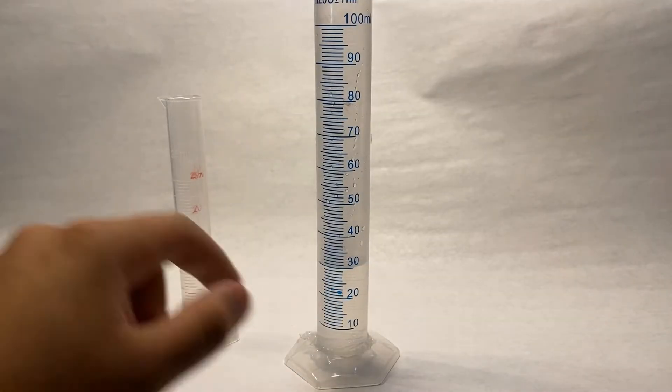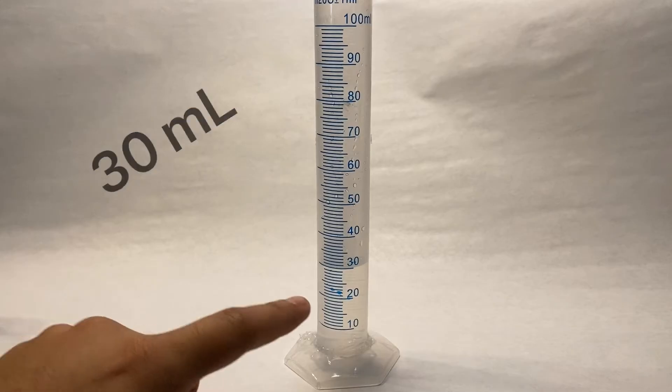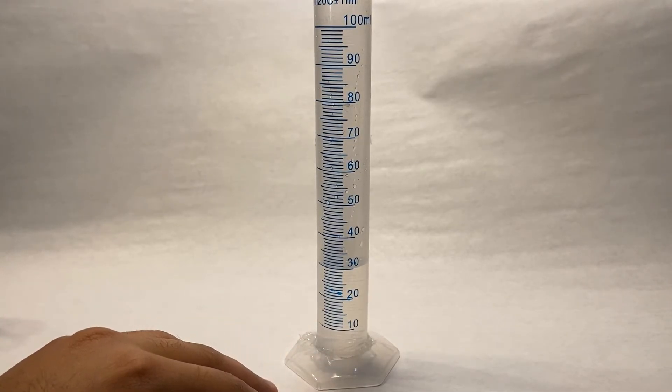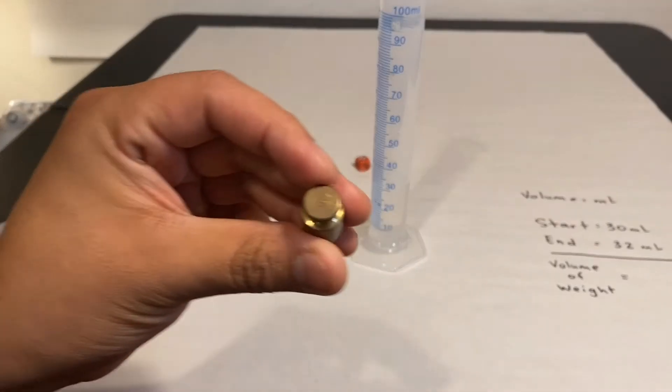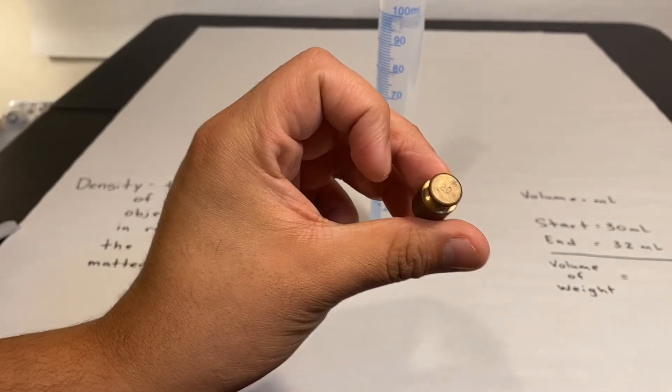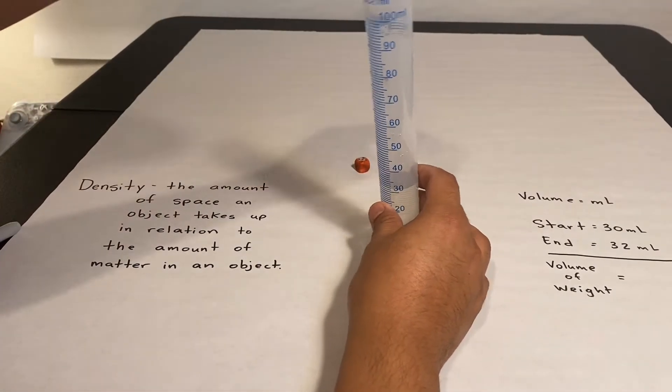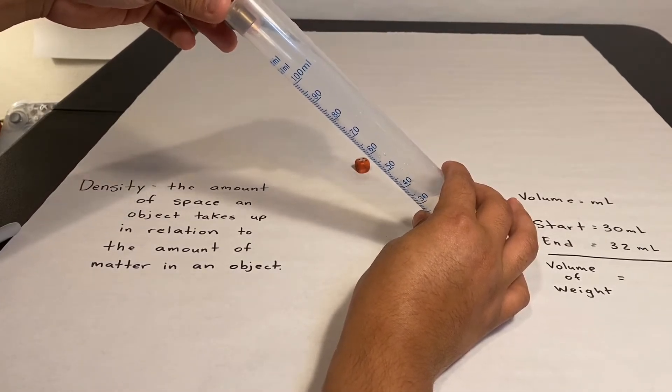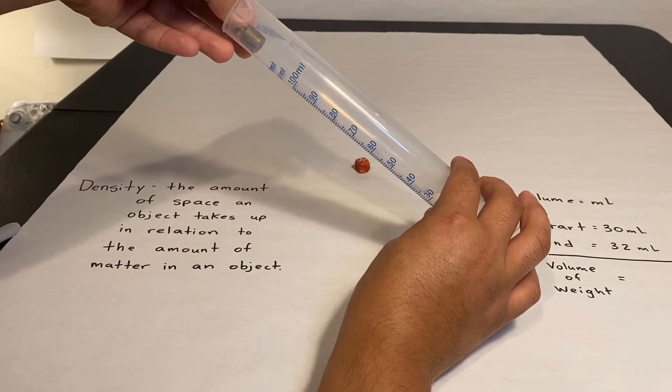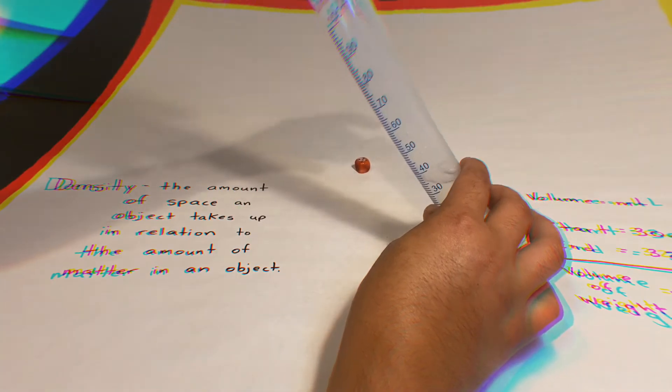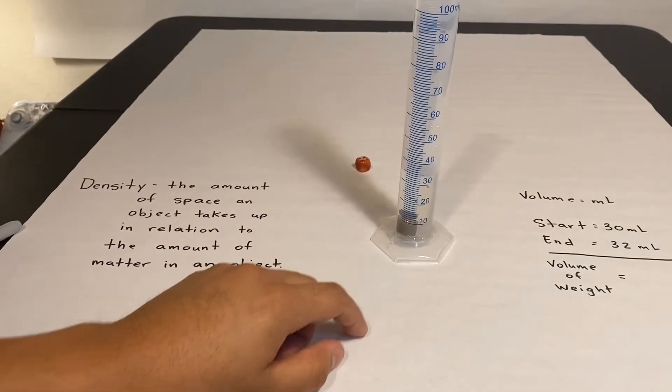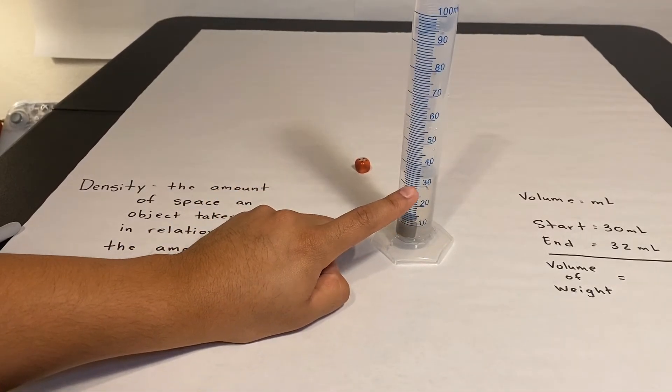Now right now I have 30 milliliters in the graduated cylinder. Now how am I going to measure the volume of an object? Drop this 20 gram weight into it. I'm going to tilt the graduated cylinder so make sure it will not splash.